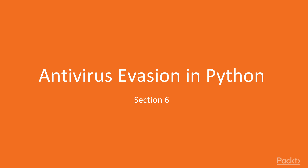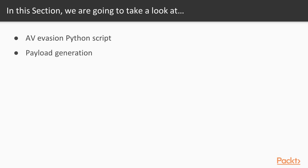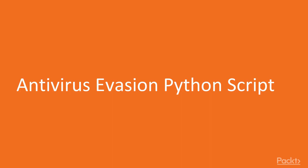Hello and welcome to Section 6 of the course: Antivirus Evasion in Python. In this section we are going to cover various points — first we will learn about antivirus evasion Python scripts, then how you can create a payload or a virus, then how we can transfer it to the victim machine, and finally how we can take complete access of the victim.